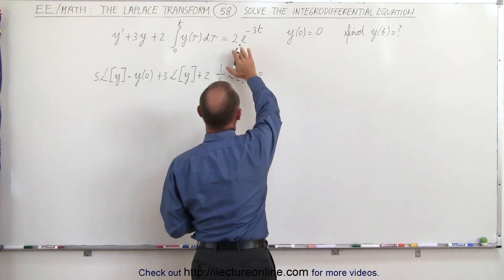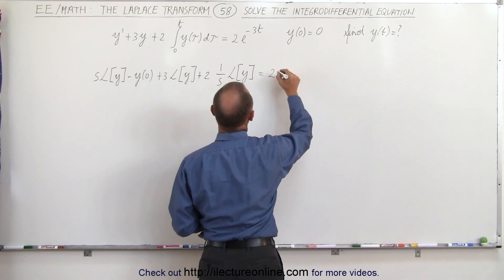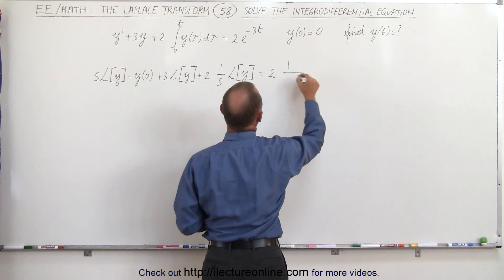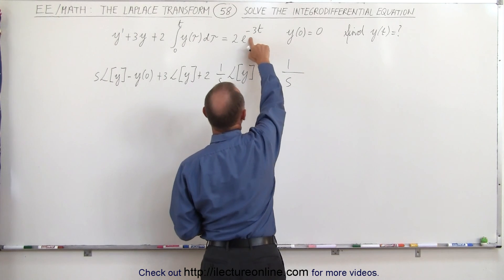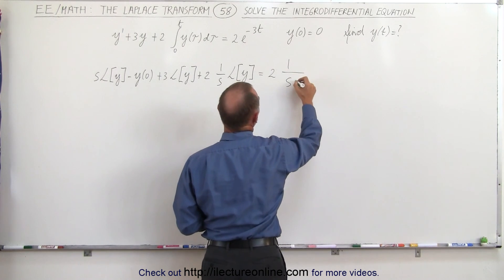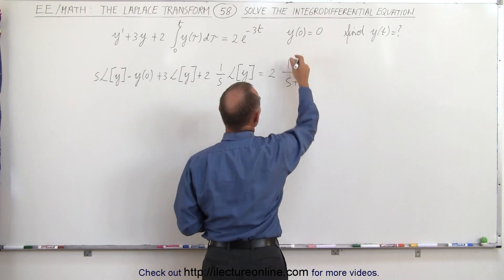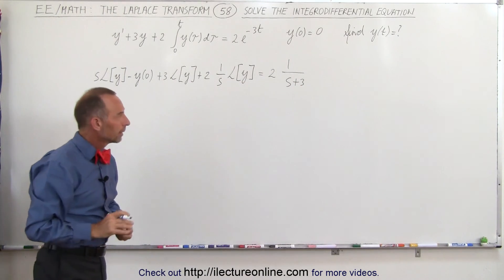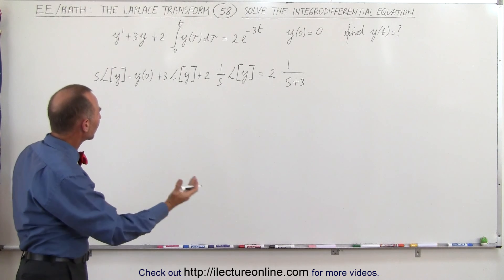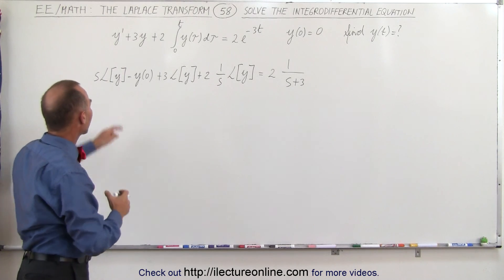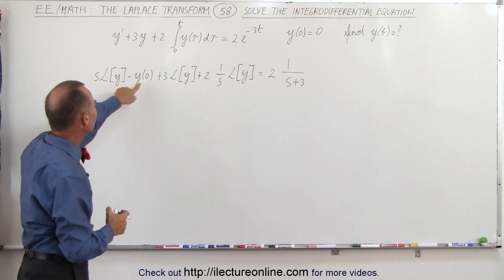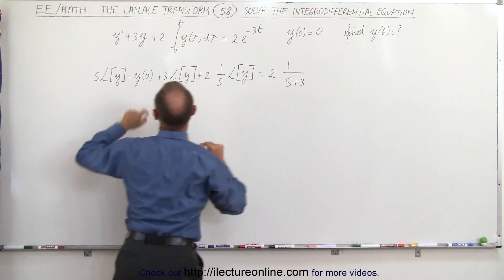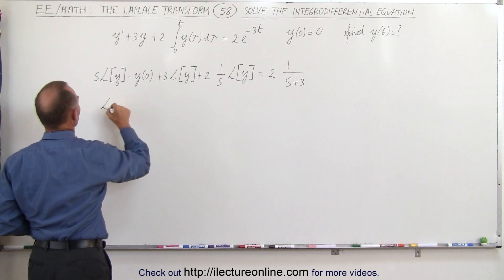Taking the Laplace transform of the right side, we get 2 times the Laplace transform of e to the minus 3t, which gives us 1 over s, and with the shift e to the minus 3t gives a shift of s plus 3. Now we can factor out L{y} on the left side.